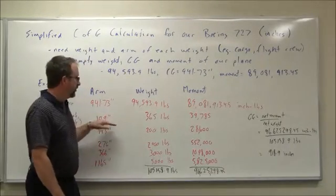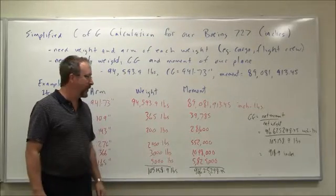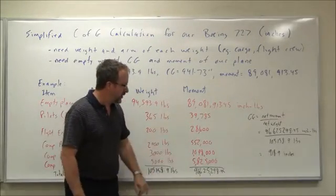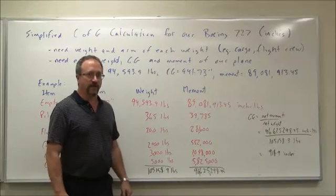The moments for each, multiply through the arm times the weight to get all these moments for each weight. Add up the moments, 96,625,298.45 inch-pounds.